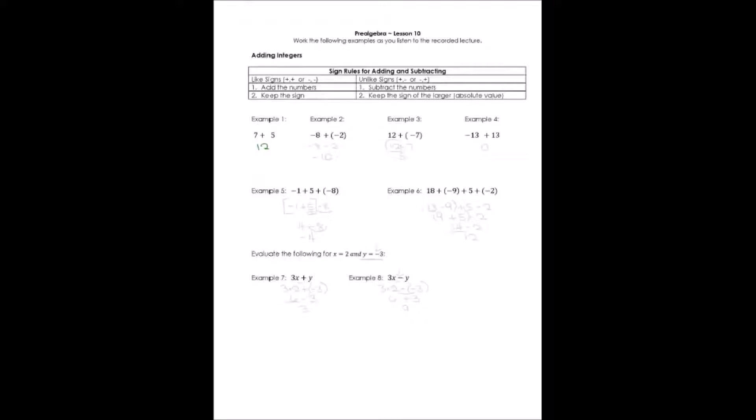Look at example number 2. I've got a negative 8 and I'm adding a negative 2. Now, there's another way this could be written. It could be written as negative 8 minus 2. Still, both have negative signs. The signs are the same, so we add the numbers and we keep the sign, which is negative.